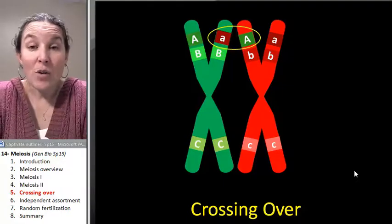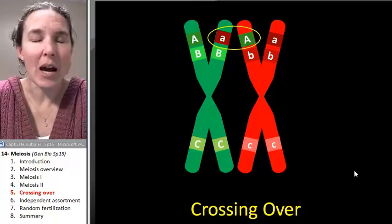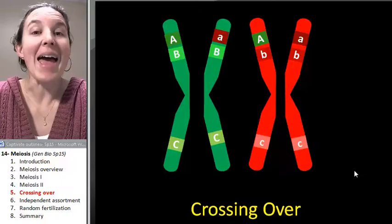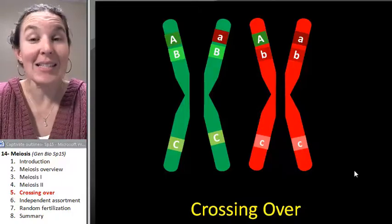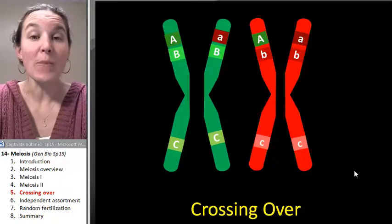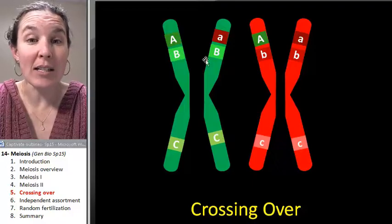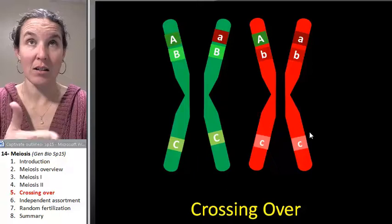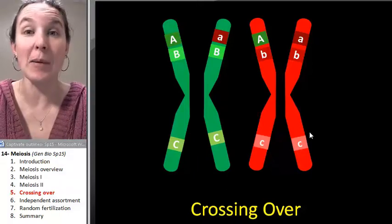Now, if you go through metaphase, I mean, anaphase one and separate your homologues, and then anaphase two and separate your sisters, you can imagine that each one of these is a chromosome found in a gamete.